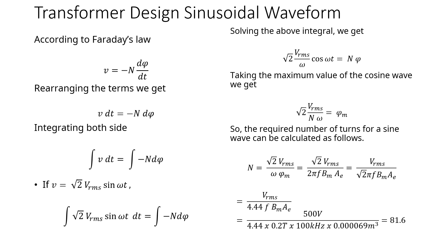If we use the sinusoidal voltage in this expression and integrate it, we will get this expression which gives us the maximum flux density. We can also rearrange the terms to get the number of turns. Solving further we get this well-known expression for the transformer design in the case of a sinusoidal waveform.